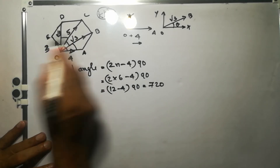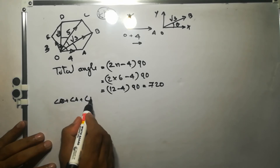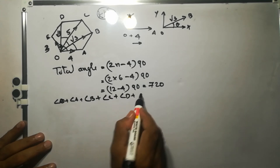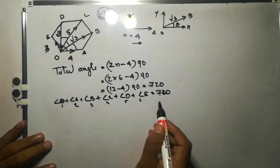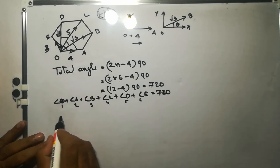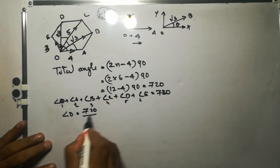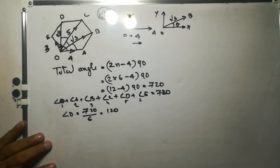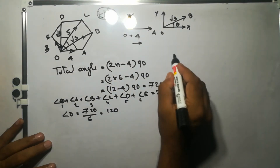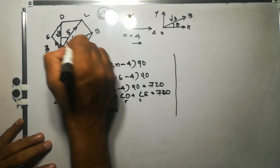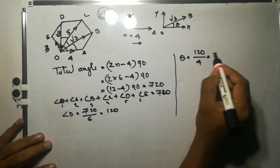Since all six angles are equal, each angle is 720° ÷ 6 = 120°. Now, within each 120° sector there are four equal sub-angles theta, so each sub-angle theta equals 120° ÷ 4 = 30°. This 30° is the angle between adjacent force directions: OA and OB, OB and OC, OC and OD, and OD and OE.